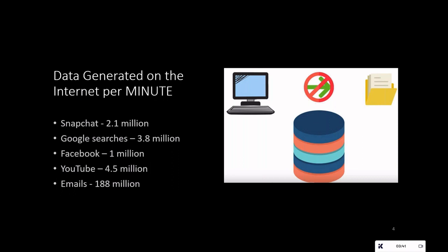Let's look at the data generated per minute on the internet: 2.1 million snaps are shared on Snapchat, 3.8 million search queries are made on Google, 1.1 million people log on to Facebook, 4.5 million videos are watched on YouTube, and 188 million emails are sent. That's a lot of data — and yes, this is per minute.